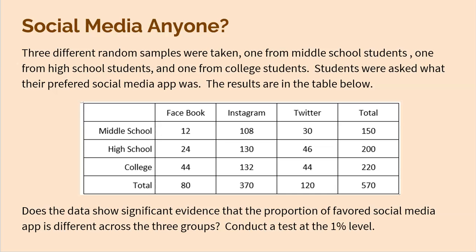So here's the question. Three different random samples were taken. I'm actually going to stop right there. That's why this is a test for homogeneity, because there's more than one sample. An independence test is when there's one sample and you look at two different things from that sample. But here we're looking at three different samples: one from middle school students, one from high school students, and one from college students. And we were asked what social media app they prefer. Here are the results.